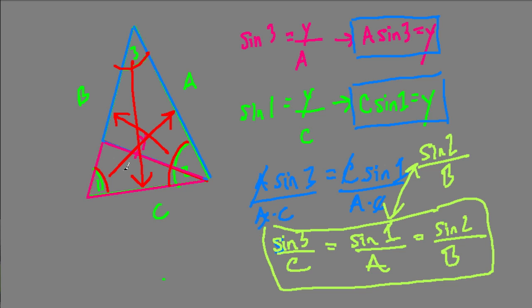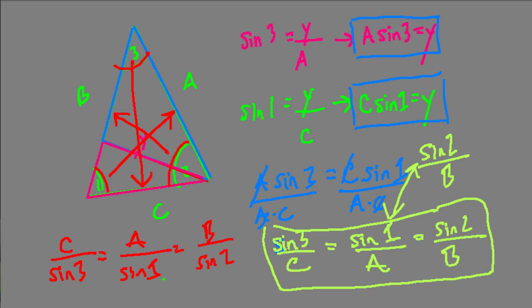So the sine of angle 2 over B equals the sine of angle 1 over A, which equals the sine of angle 3 over C. That's a really useful relationship, especially when we didn't even know what kind of triangle this was. And of course we can flip everything: C over the sine of angle 3 equals A over the sine of angle 1, which equals B over the sine of angle 2. In a textbook you'd typically see this as B over sine B, A over sine A, and C over sine C.